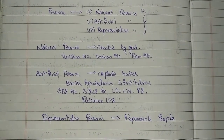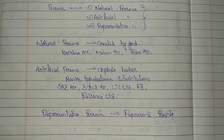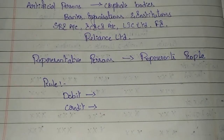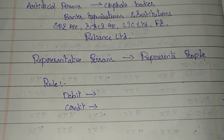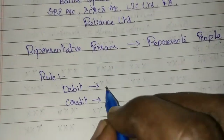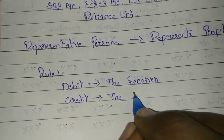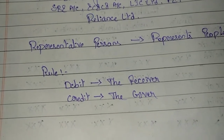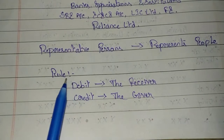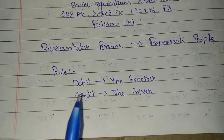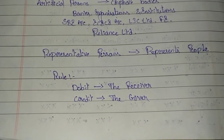Now we will see the rule we follow for personal accounts. Whenever you are having transactions related to a personal account, according to the double entry system, you should make two entries — debit and credit. The rule for personal account is: debit the receiver, and credit the giver. The person who is receiving will be shown on the debit side, and the person who is giving will be shown on the credit side.